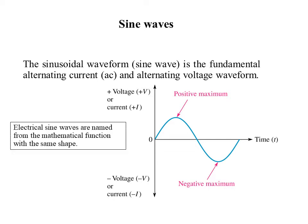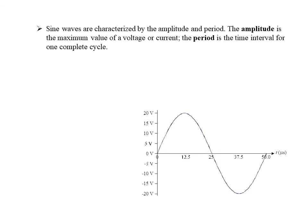An electric sine wave is named from the mathematical function with the same shape. This is the shape of our sine wave. The sine waves are characterized by the amplitude and period — it has amplitude as well as a time period.